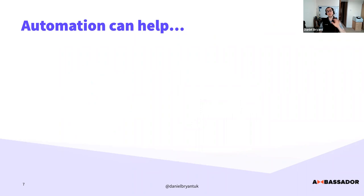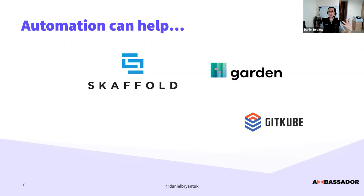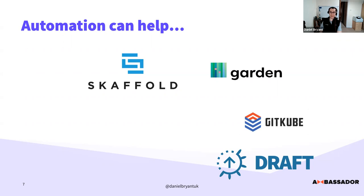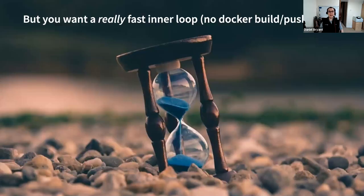Automation can help — there's a fantastic range of open source tools out there. Skaffold by the Google folks automates building containers and pushing to a registry behind the scenes; you can sync file systems and do port forwarding. Garden is similar. Okteto does automation around syncing your local development loop to a remote Kubernetes cluster with namespace-as-a-service. And Tilt — I'm loving the Tilt folks. Draft has fallen by the wayside as Microsoft are no longer committing to that project.